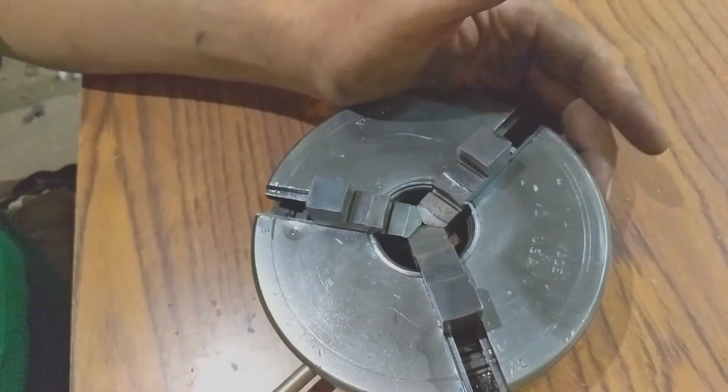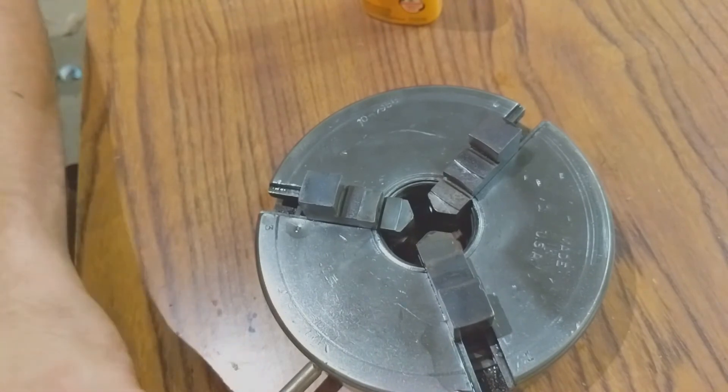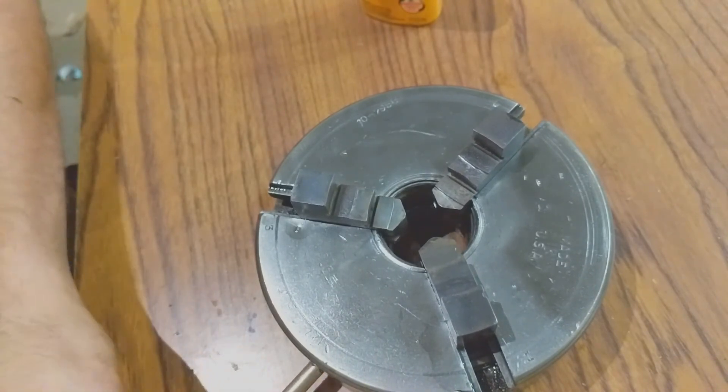Lapped the face. I lapped the edges and sides of the jaws, and then I took a wire wheel to anything that had any extra rust that I didn't want on there.